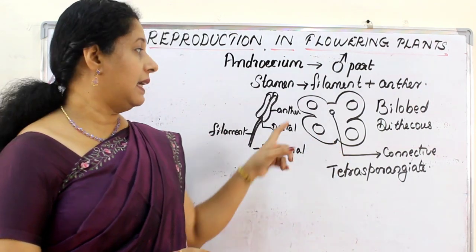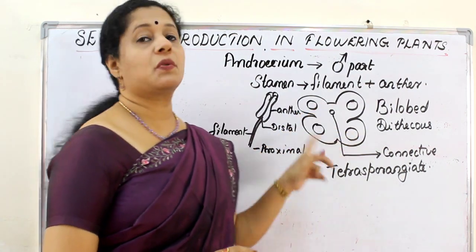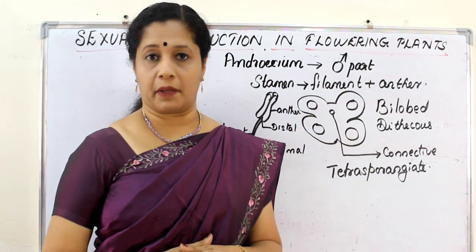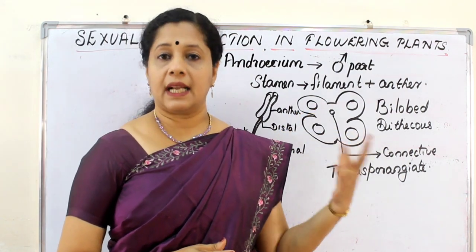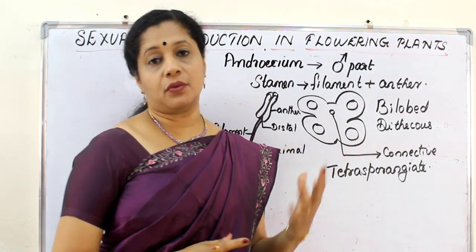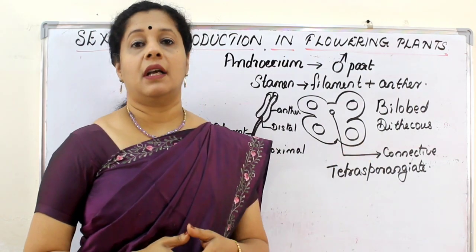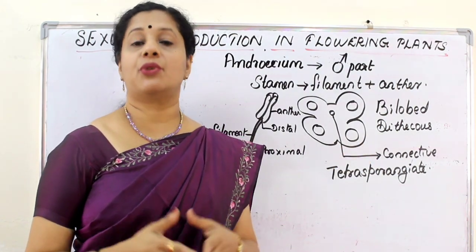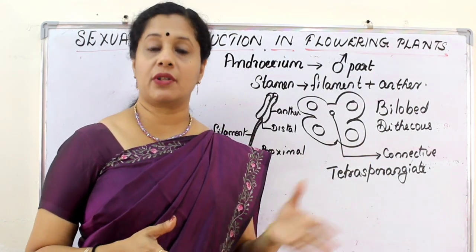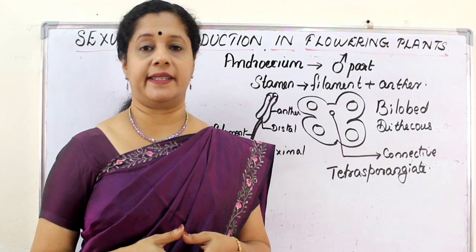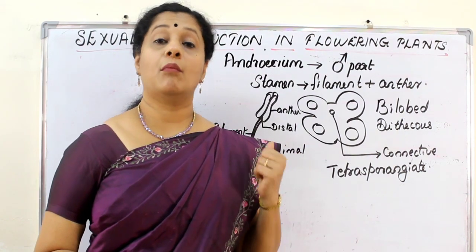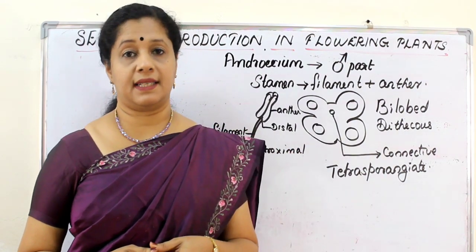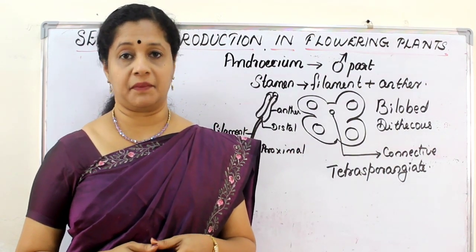Within the microsporangia the pollen grains are forming. There are exceptions to this structure — in hibiscus, the shoe flower belonging to family Malvaceae, the anther is monothecous, meaning there is only one theca inside the anther.